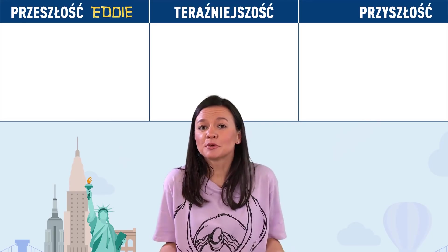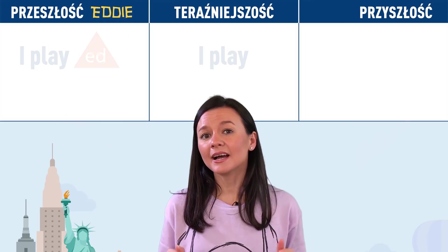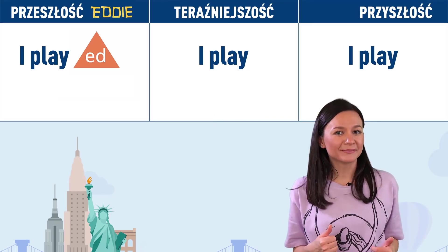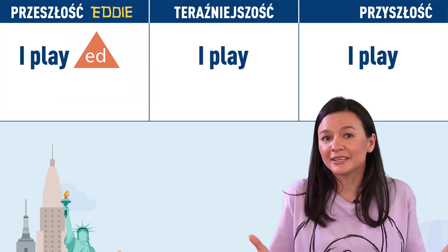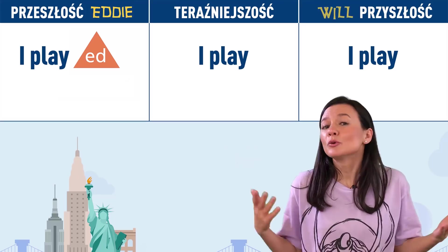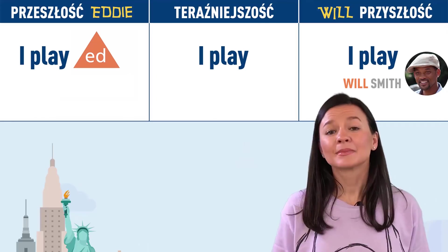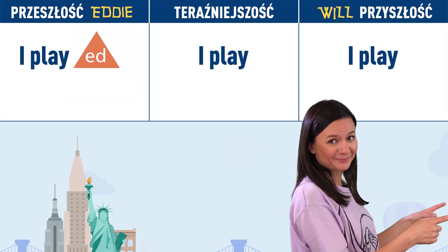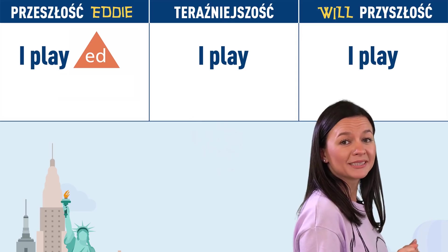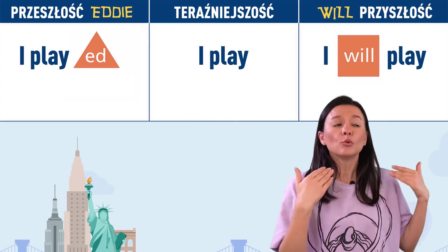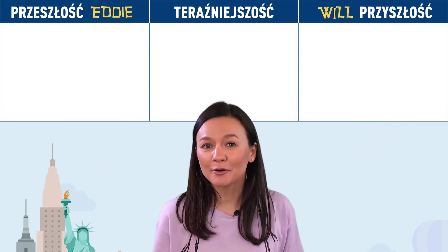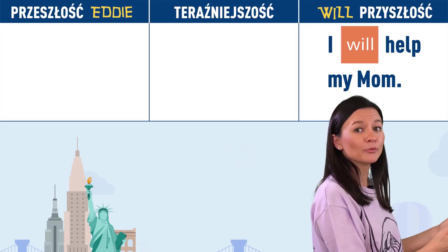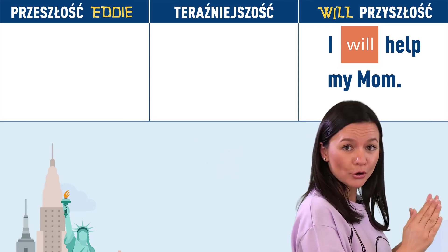A co, gdy chcesz powiedzieć o przyszłości? Jak ze zdania I play – ja gram – zrobić zdanie ja będę grał? I tu znowu fajna niespodzianka. Wystarczy dodać imię do czasownika. A to imię to Will, jak słynny aktor Will Smith. Uważaj, ponieważ mówimy o przyszłości, czyli o tym, co przed nami, więc Will dodamy tym razem przed czasownikiem: I will play. I już. To jak powiesz pomogę mojej mamie? To już dla ciebie proste: I will help my mom. I will help – pomogę w przyszłości.